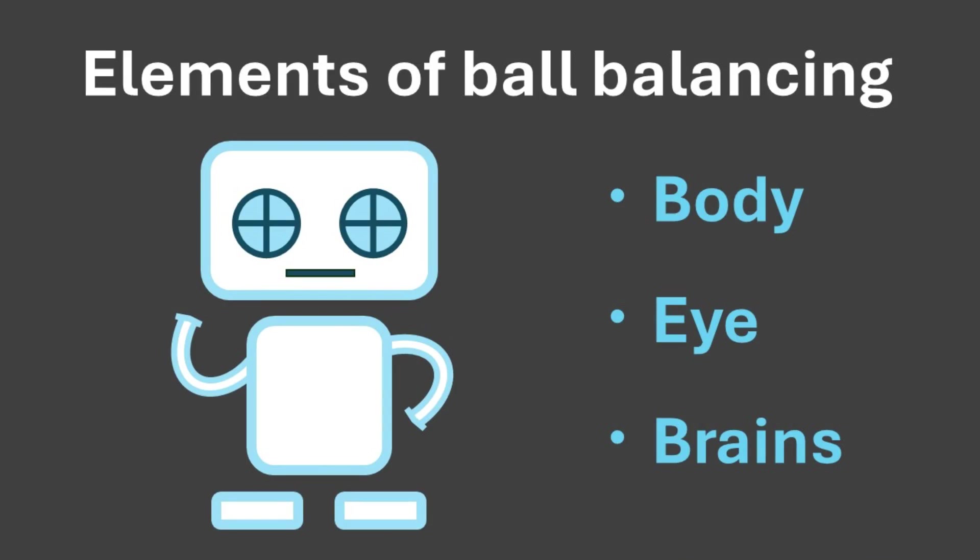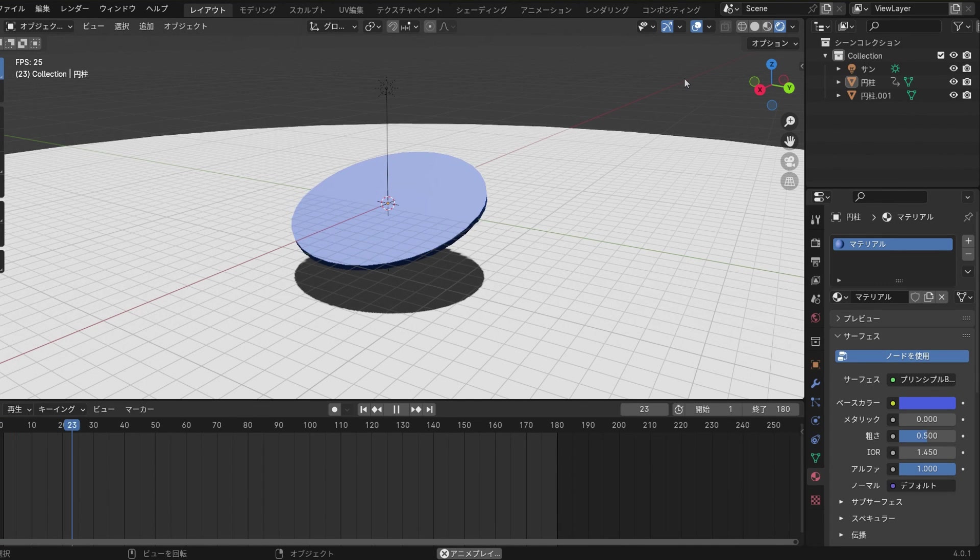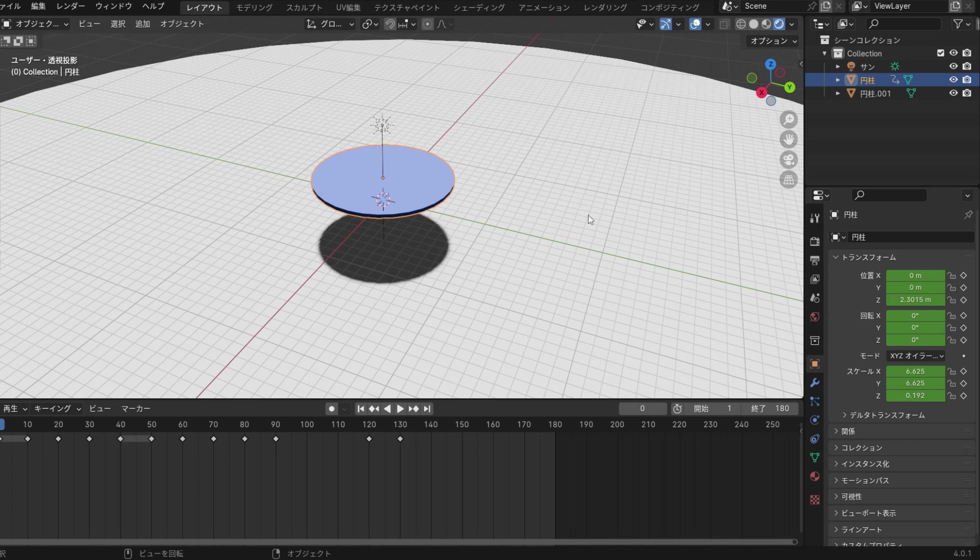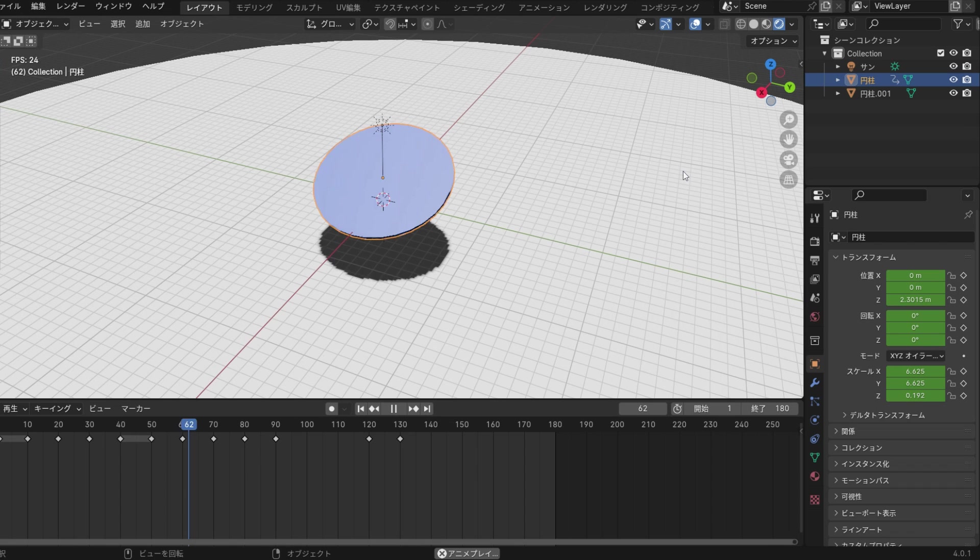First, let's consider the robot's body. How many degrees of freedom are needed to tilt the platform 360 degrees in any direction? The answer is two. If the platform can tilt in two directions, x-axis direction and y-axis direction, it can tilt freely 360 degrees by combining them.